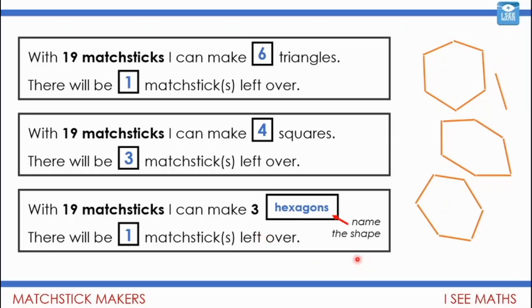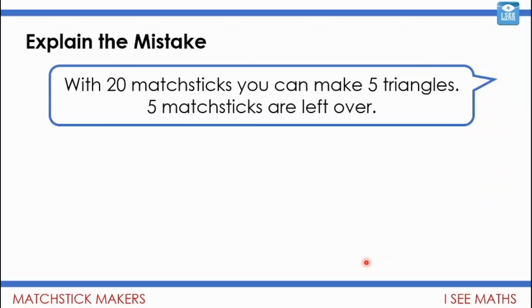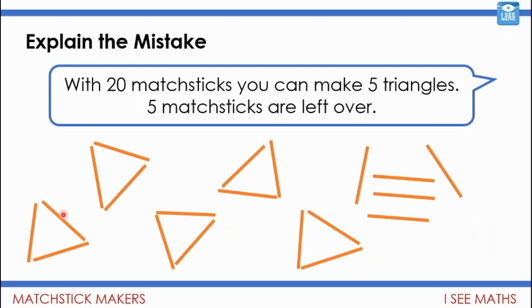Now I wonder if you can explain this mistake. With 20 matchsticks you can make five triangles, and five matchsticks are left over. Pause the video — what mistake has been made? Well, with 20 matchsticks, five triangles would be 15 matchsticks with five left over. But of course I could make another triangle with those five matchsticks remaining! So you'd actually have six triangles and two left over.